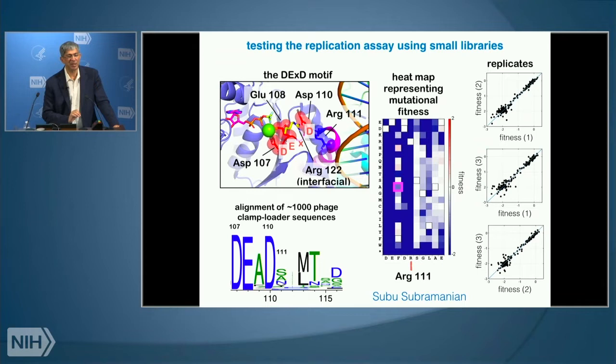The third aspartic acid — the last D in the motif — is not a catalytic residue. It coordinates an arginine (arginine-122) presented by a neighboring subunit. So it's important for interfacial coupling. A sequence logo was generated by Subu by aligning 1,000 phage genomes, showing the conservation of residues in this segment across those 1,000 phages — a restricted library looking at the broader family.